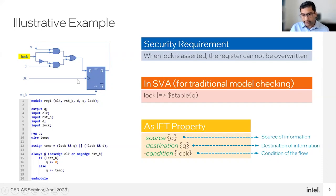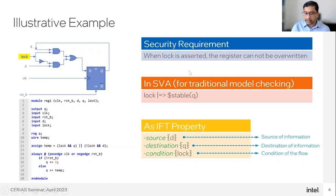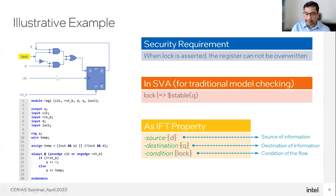Here, what I am specifying is: the source of my information is D, the destination is Q, and the condition is lock. When lock is set, I want to check whether there exists a path from source D to destination Q. Whether a path exists depends on whether there is a bug in the circuit. In a bug-free circuit, depending on the security requirement, I should not see a path for this specification. Once I specify this IFT property, I can use available tools to check whether this property is satisfied on this design.